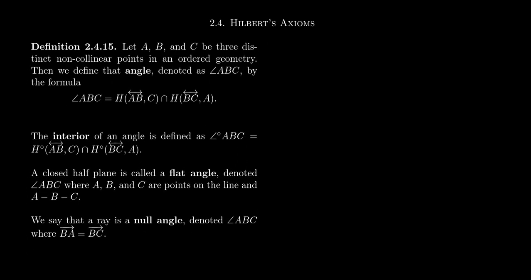So consider three distinct non-collinear points in an ordered geometry. Then we can define the angle denoted as angle ABC by the following formula. The angle ABC is the intersection of two half planes: the half plane determined by the line AB and the point C, with the half plane determined by the line BC on the side of A.